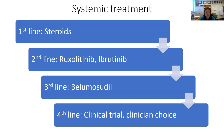Moving on to systemic treatment: this shows the algorithm that includes currently FDA-approved agents for treatment of chronic GVHD overall. First line, nothing has been proven better than steroids alone. Second line, FDA-approved agents are ruxolitinib and ibrutinib. Third line, we also have belumocidil. When we get to fourth line treatment — and oftentimes we are talking about fourth line in this disease — we look at clinical trials. Otherwise, there is a list of options that is clinician choice.